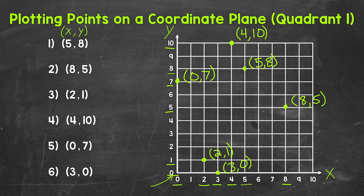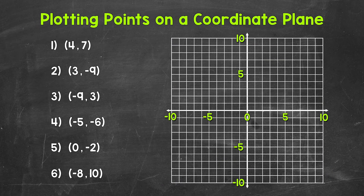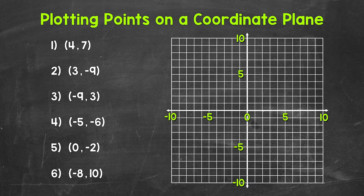So there's how to plot points in quadrant 1. Let's move on to plotting points in all four quadrants. Now let's take a look at all four quadrants — you can think of this as zooming out from quadrant 1. Now we can see and will be working in all four quadrants, so we will be working with positive and negative coordinates. Let's start by labeling the x and y-axis. This is the x-axis right here, and this is the y-axis right here.